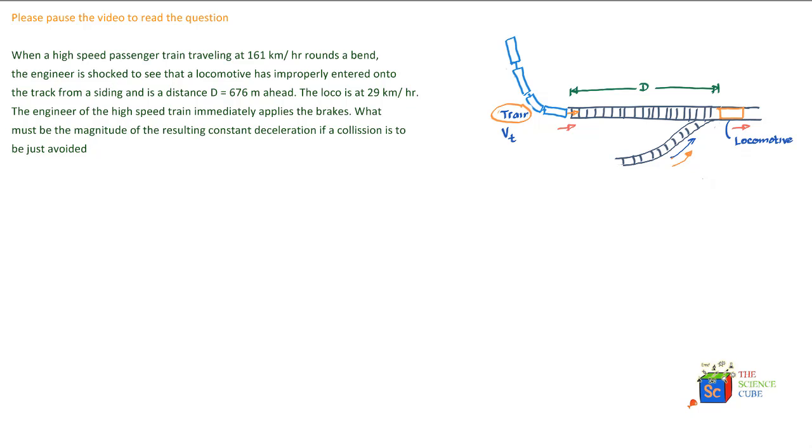The two trains, the train and the locomotive, would move together. So let's say it takes time t seconds for such a situation to arise. Then vL² = vT² plus 2a times the displacement of the train, where the final velocity of the train becomes vL and its initial velocity is vT.